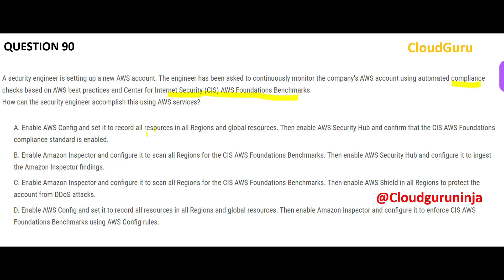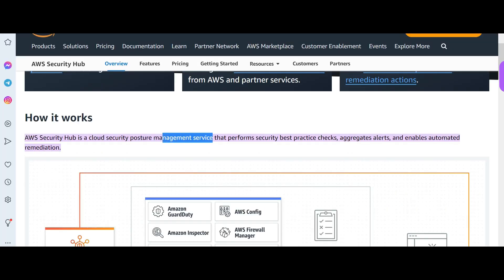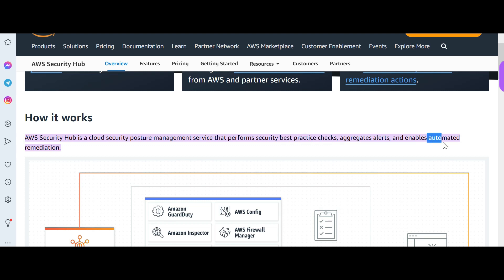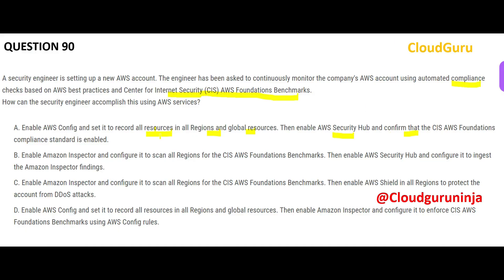The first thing we do is record all sources in all regions including all global resources — that's point one. Then we enable Security Hub, which is a posture management service. Please note: Security Hub is used for best practice checks and automated remediation. Not only will it check, it will also fix — like a doctor who not only identifies the problem but also gives you medicine to fix it. This confirms that the Foundation Compliance Standard is enabled. Option A is correct.